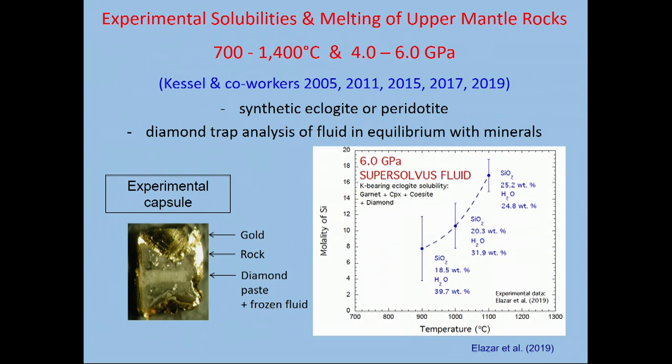As a function of temperature, published by Elazar et al., 2019, you can see that by the time we get up to 1100 degrees C at 6 GPa, we are in what's called a supercritical fluid, which I like to call a supersolvus supercritical fluid, to emphasize that this fluid is beyond the stage of the separation of melt and fluid, it's above the solvus, and it's just a continuous solubility curve.